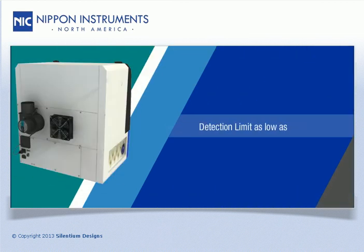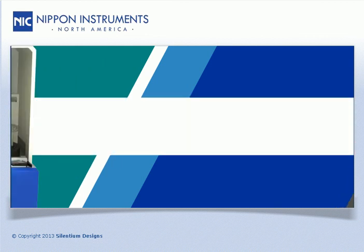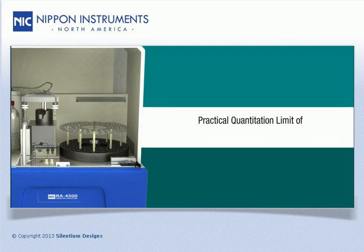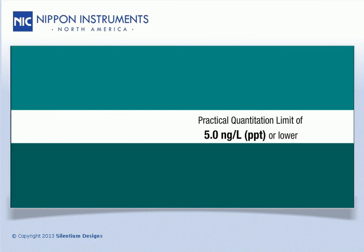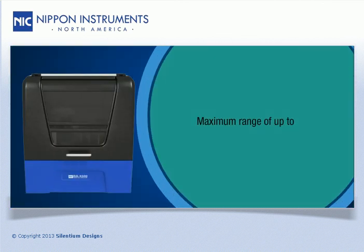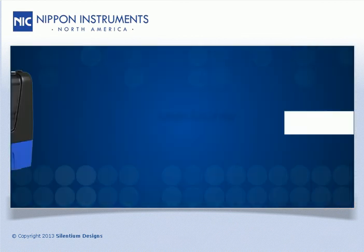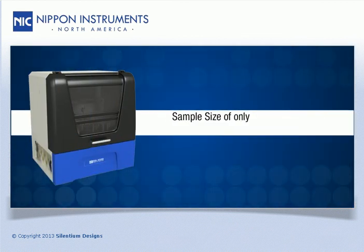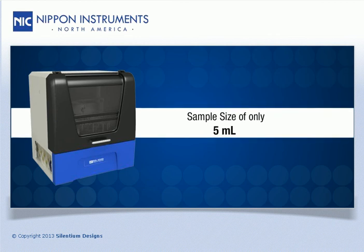The RA4500 offers a detection limit as low as 0.5 nanograms per liter or parts per trillion, a practical quantitation limit of 5 nanograms per liter or parts per trillion or lower, and a maximum range of 100 micrograms per liter or parts per billion. It is capable of achieving these near trace level mercury measurements with only 5 milliliters of sample.